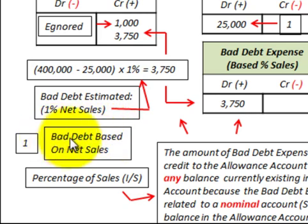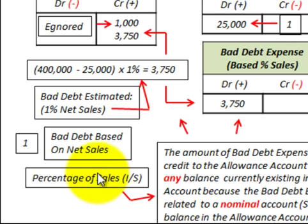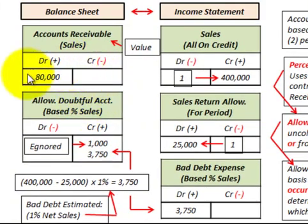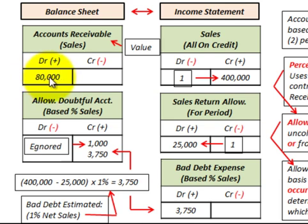Now let's look at our example. We have bad debt based on net sales — that's the percentage of sales, or income statement approach. The bad debt estimated is 1% of net sales. We're given financial information before any adjustments are made.